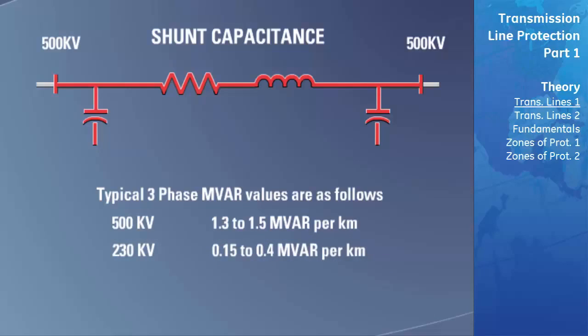Shunt capacitance occurs between the transmission lines and the ground. This capacitance counterbalances some of the inductance by adding leading MVARs on the line and helps bring the current and voltage back to unity power factor. Caution needs to be taken with high voltage potentials. Due to the Ferranti effect, the shunt capacitance on the line can become so large that the voltage on the far end of the line can rise higher than the normal line potential.